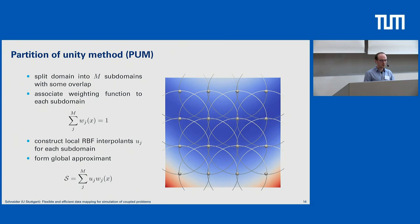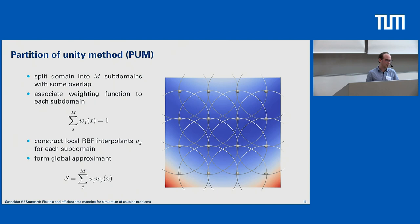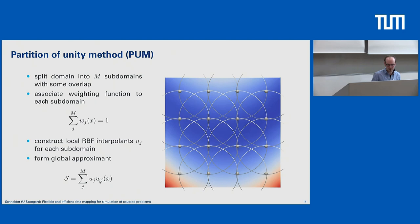The partition of unity method works fundamentally differently. Here we first split the domain into a number of subdomains M — showcased on the right side, where partition centers are indicated by spheres and partition size by circles around them. We associate a weighting function to each partition, requiring that the sum over all partitions equals 1. We then construct local RBF interpolants for each subdomain, and to get our global solution, we weight each local solution with the weighting function and sum over all partitions.